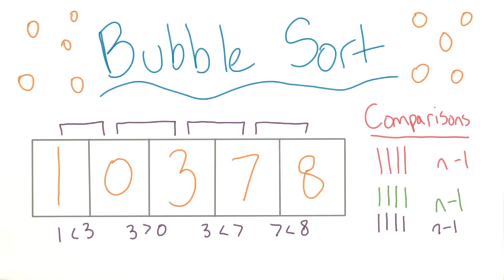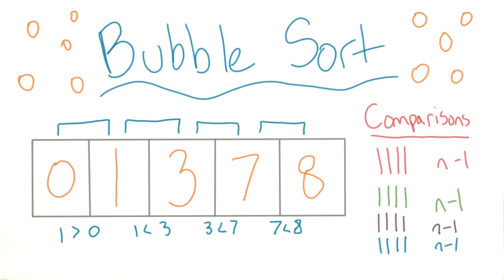And again, note that this took four steps, so n minus one steps. We only have one iteration left. Let me show you what that looks like. This time, we only had to flip the zero and the one, and we're done.